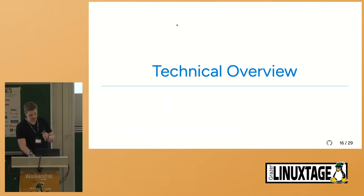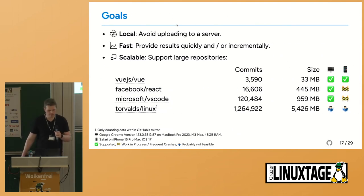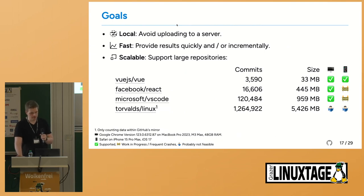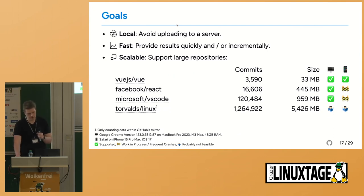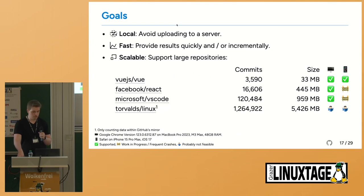I'll keep a global overview and not bore anyone too much. We've set ourselves some goals. Gizul runs completely in the browser, which means we don't need a server — we don't want to upload any data, so even developers working on closed source repositories can use our tool. We also want things to be fast and quick to load, or at least load incrementally. And we don't just want to visualize small repositories but also pretty large ones. Repositories come in very different sizes — the Linux kernel repository is five gigabytes.